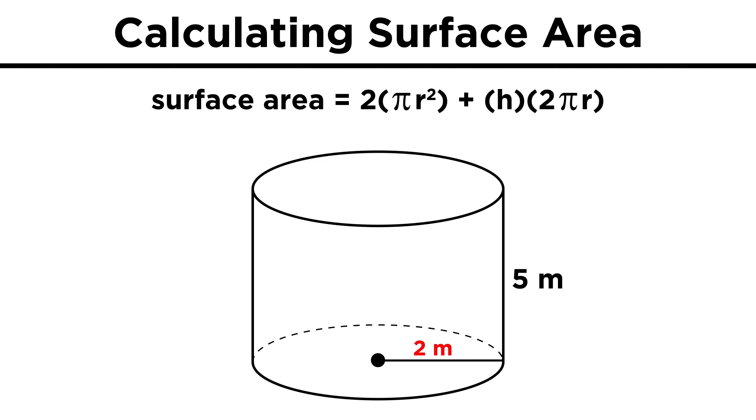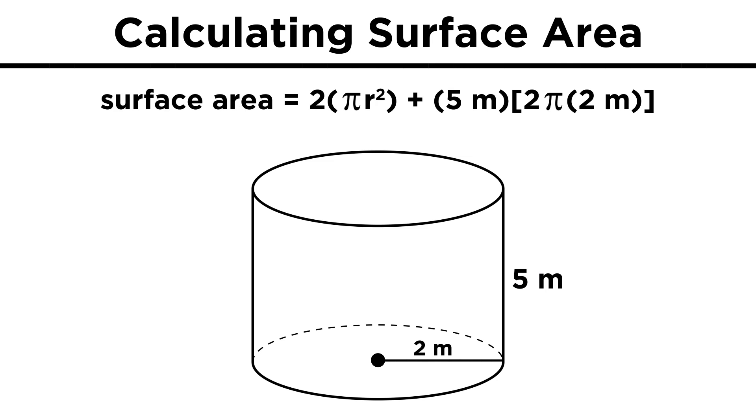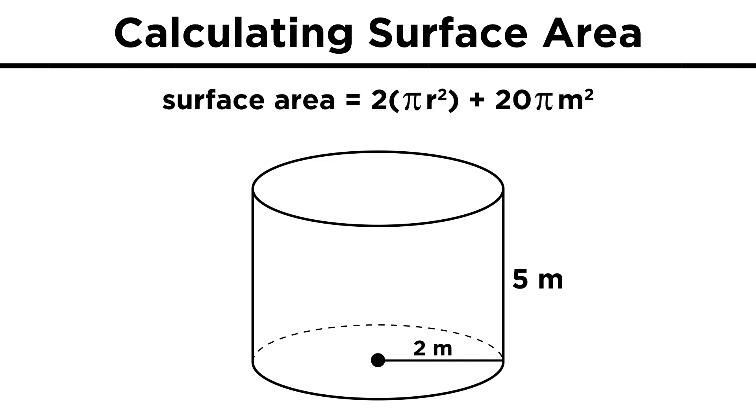So if we have a radius of two meters, and a height of five meters, we can get the rectangle first, which will be five times two pi times two, or twenty pi. Then we have two circles, which means pi times two squared, to get the area for each circle, which will add up to eight pi. Add these values together, and we get twenty-eight pi.